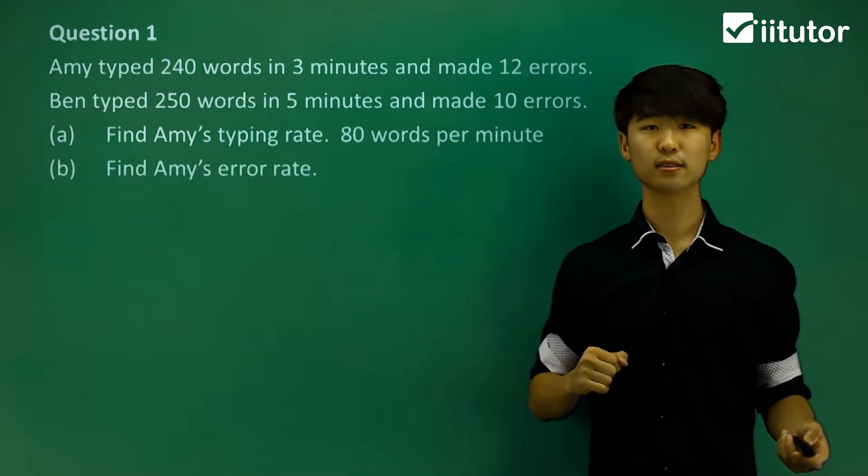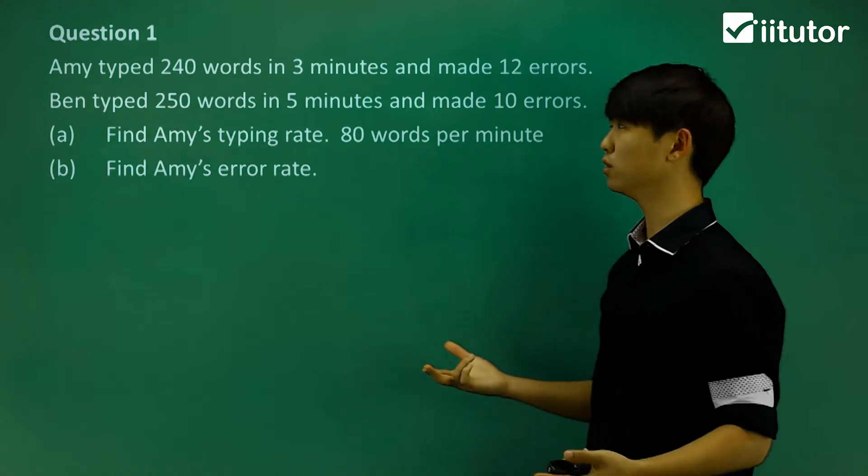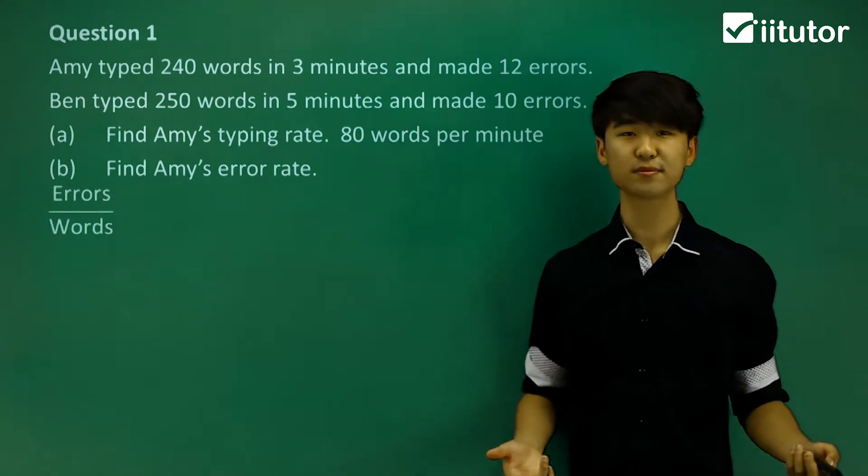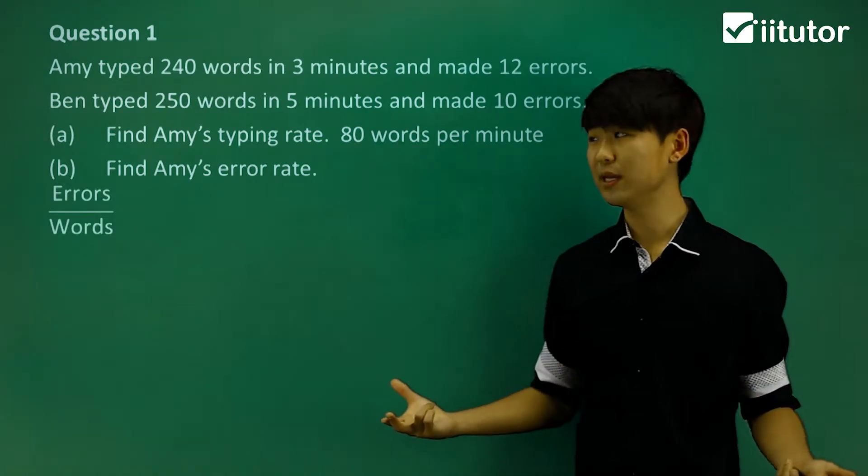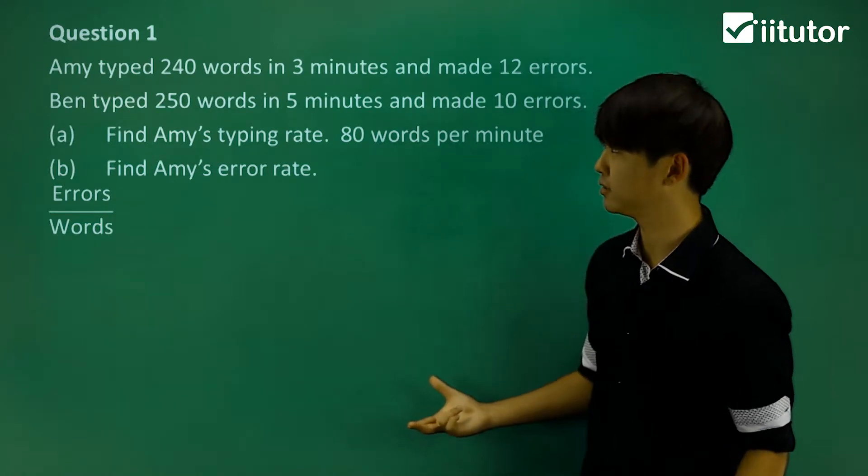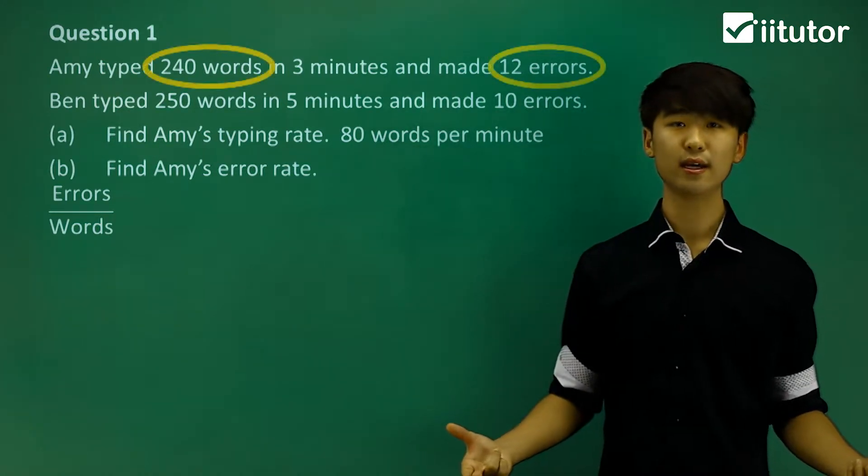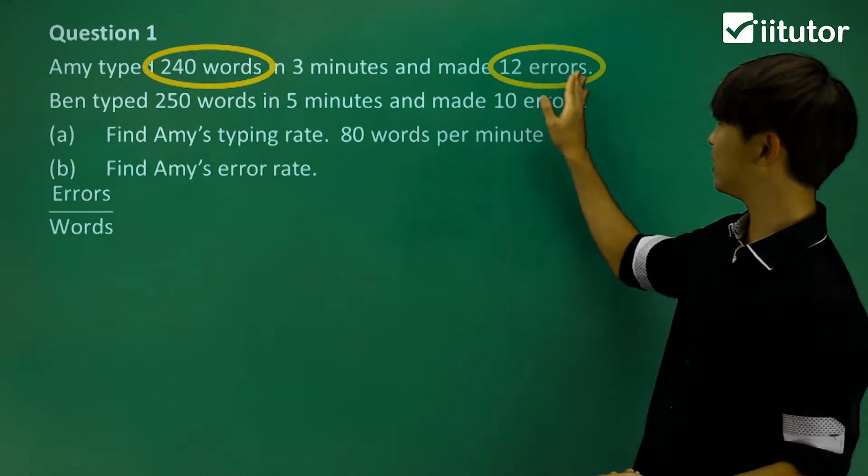Let's take a look at Amy's error rate. Well, how much error did she make? We're going to be looking at the rate of how many errors she made per the number of words. So we can see that out of 240 words, she made 12 errors.